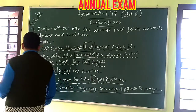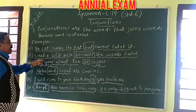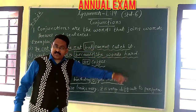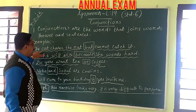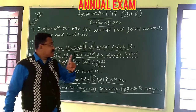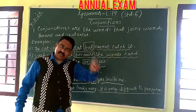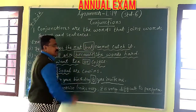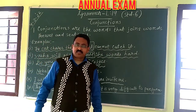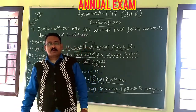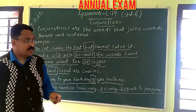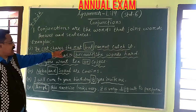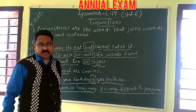See the examples here. 'The cat chases the rat but cannot catch it.' 'The cat chases the rat' is one sentence. 'Cannot catch it' is another sentence. Two sentences are there. With the help of the conjunction 'but,' we can join the sentences: 'The cat chases the rat but cannot catch it.'